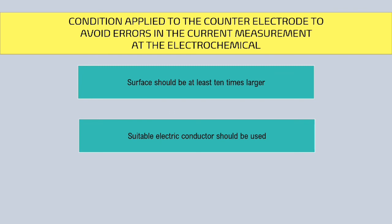As a result, rather than the half-reaction occurring on the working electrode's surface, the measured current will reveal the characteristics of the counter-electrode.